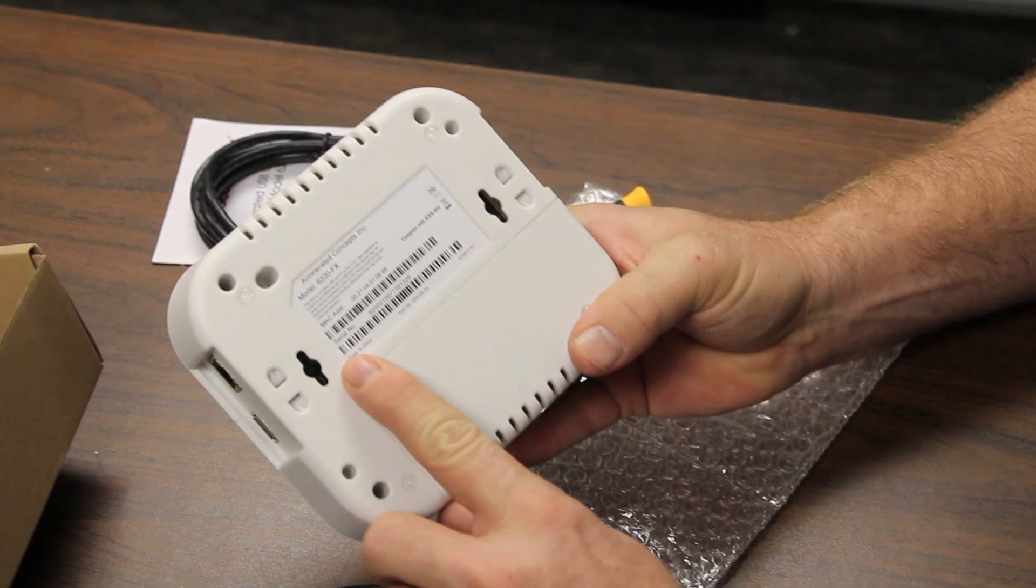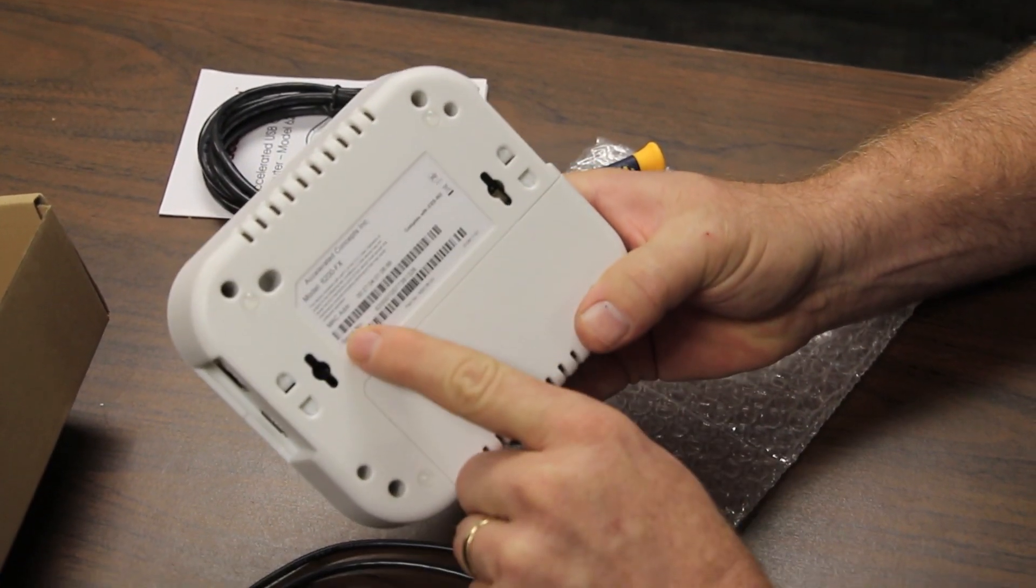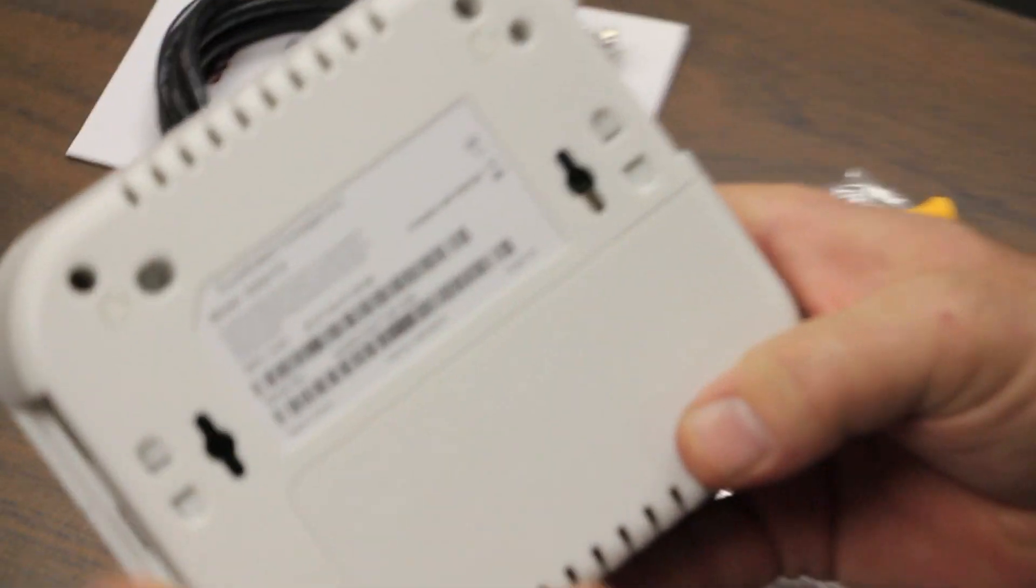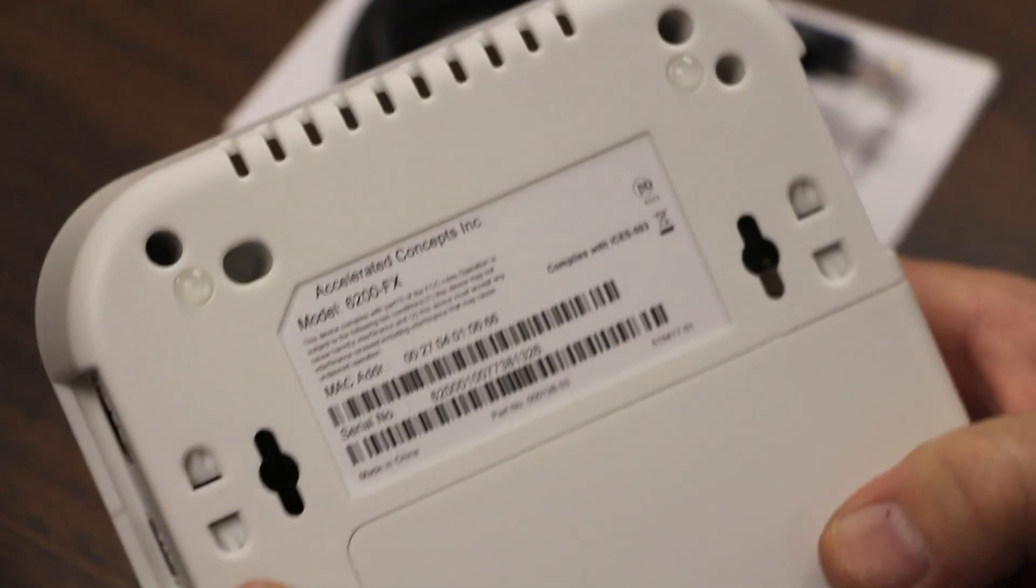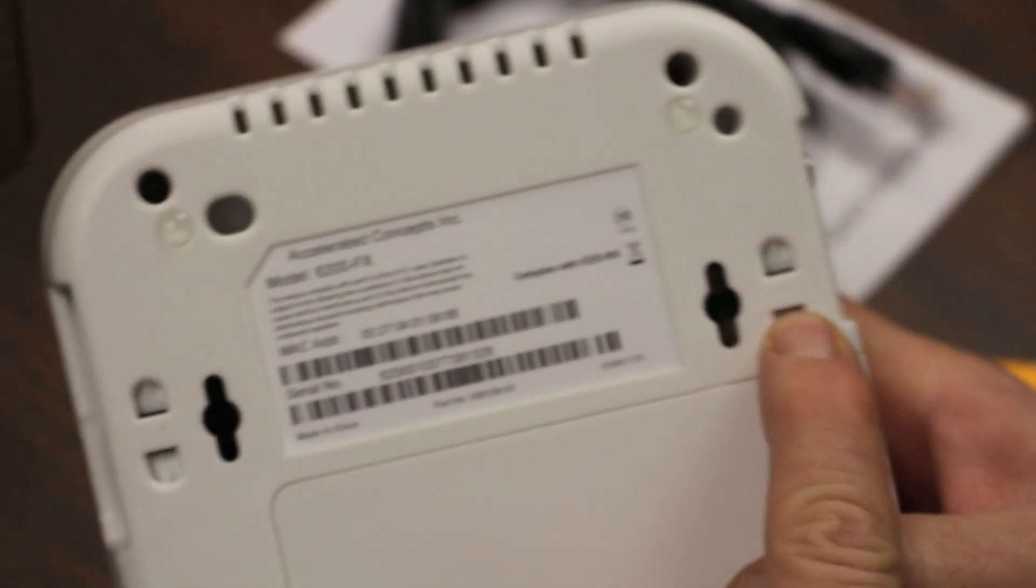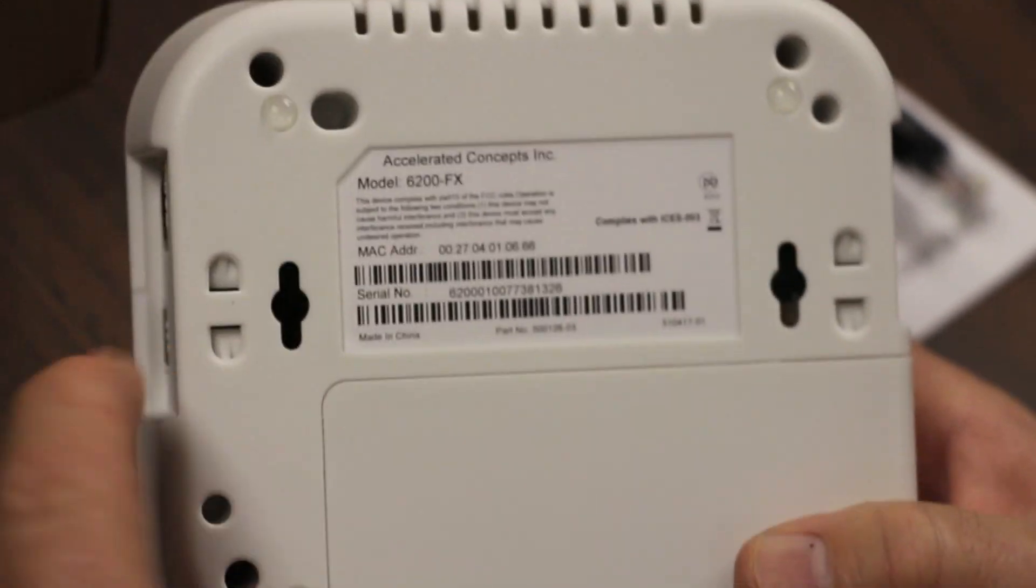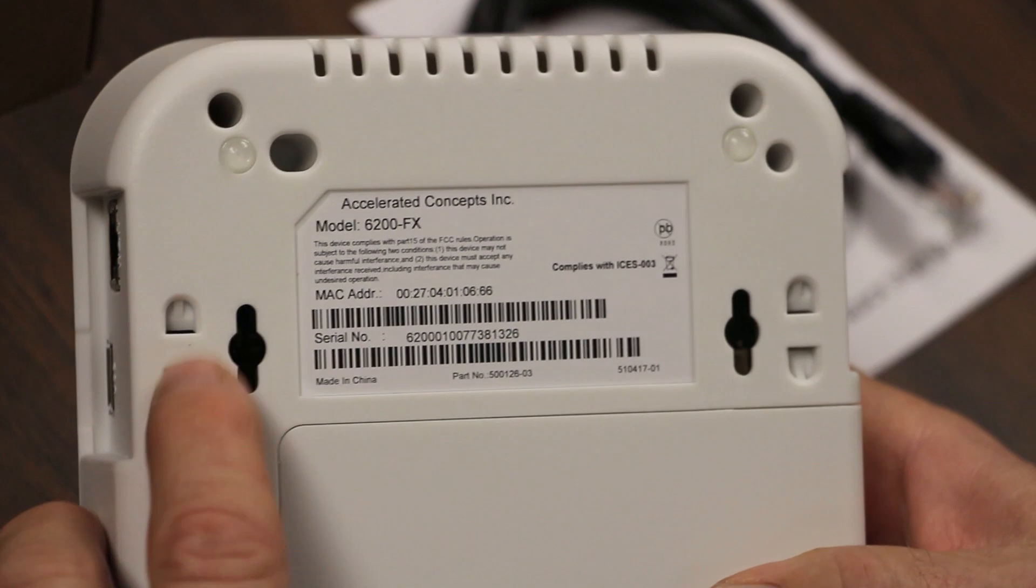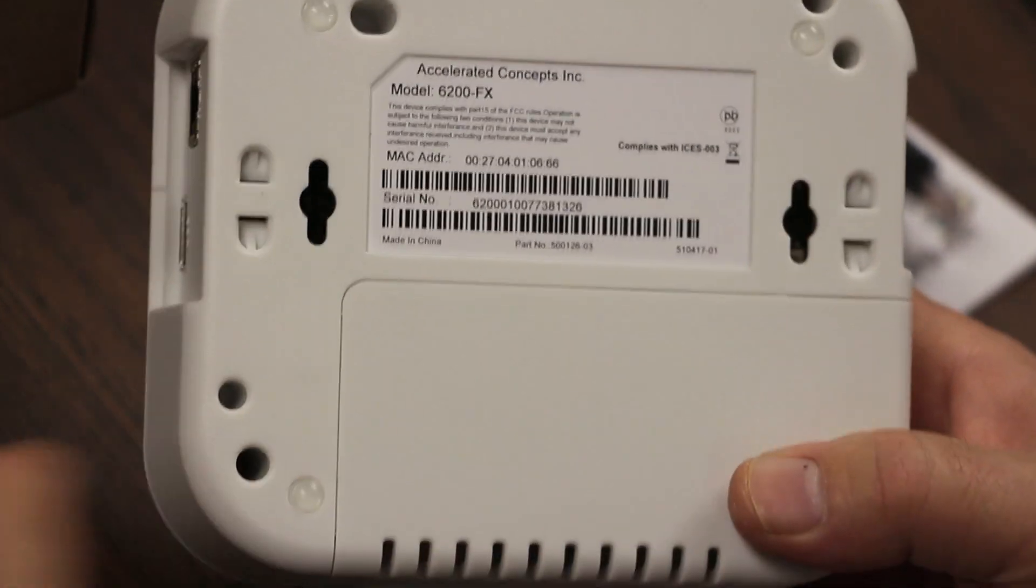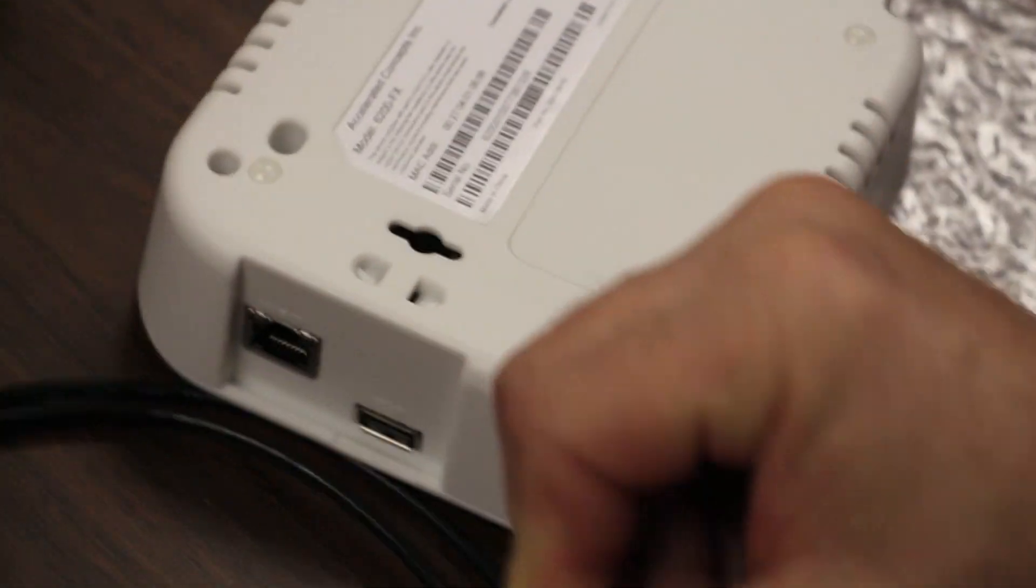Again, on the back panel label, you will see MAC address, serial number, same as you saw on the side of the box. And here are the mounting options. This is a specially designed compartment or slot that will hold a zip tie, so if you want to zip tie this to something, you can.